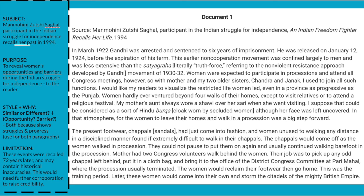When analyzing a document written by someone about their own achievements, they would want to frame things in the best light. Also consider: can you remember what shoes you wore when you were two, or what you ate two months ago? If this source recalls her life in 1994 but is describing events from March 1922, that's 72 years ago. The limitation of this document is that these events were recalled 72 years later and may contain historical inaccuracies - it would need further corroboration to raise her credibility.